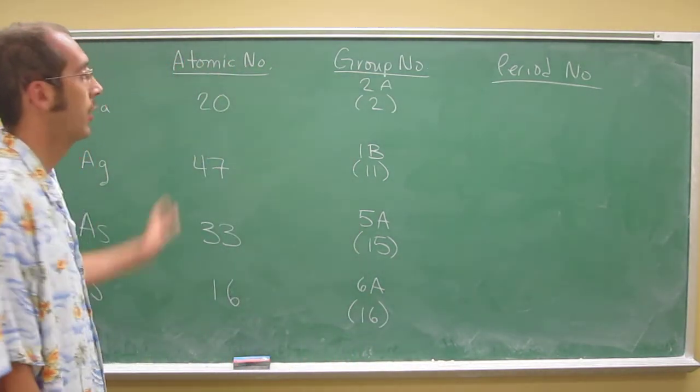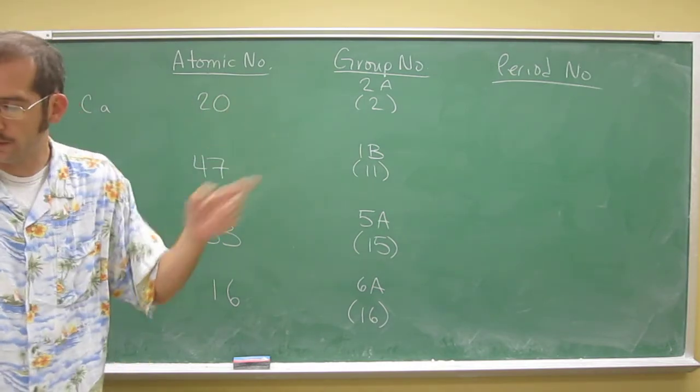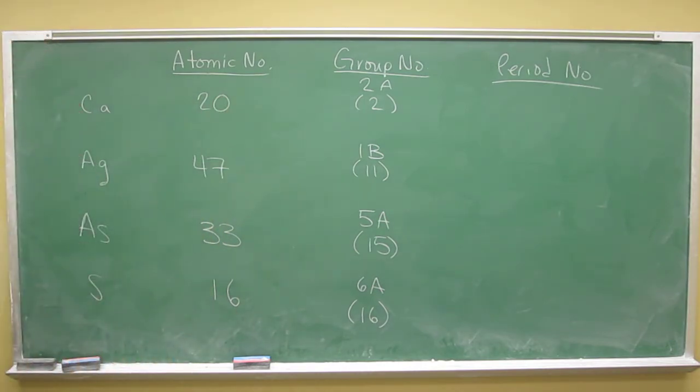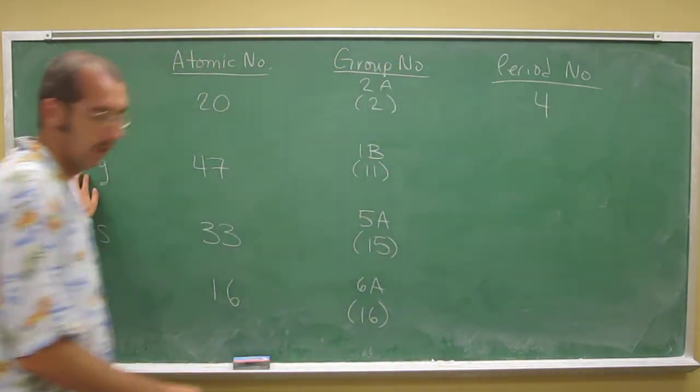And the period on the periodic table are the rows. So calcium, you can see, you count them, so the number that's on the left of the periodic table. You just count down, 1, 2, 3, 4. So calcium is in period number 4. Silver,